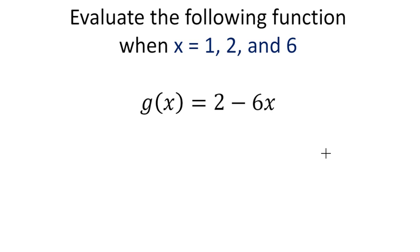For this one, we want to evaluate g(x) when x equals 1, 2, and 6. So what we do is, basically, we're looking for g(1). That's a g, by the way. We're looking for g(2). And we're looking for g(6). Wow, I can't even write that. Let's try that again. g(6). So, for the first one, if I plug in 1 for x, I get 2 minus 6. So that's negative 4.